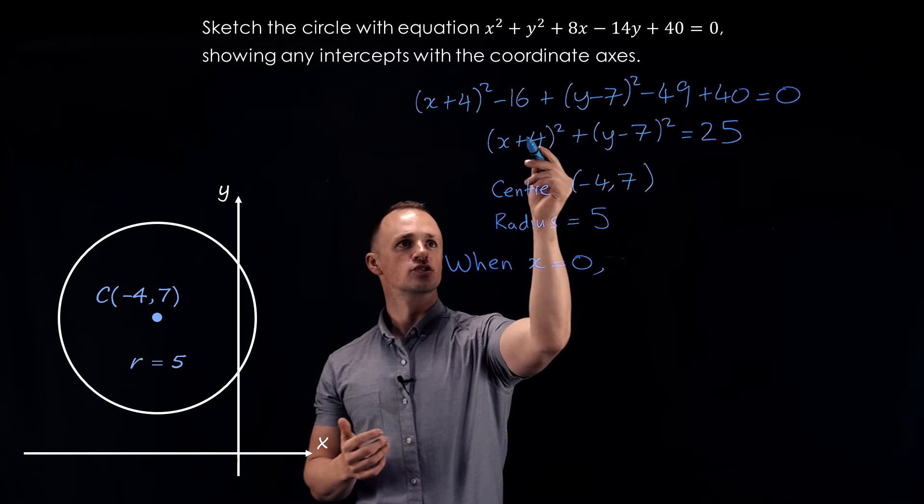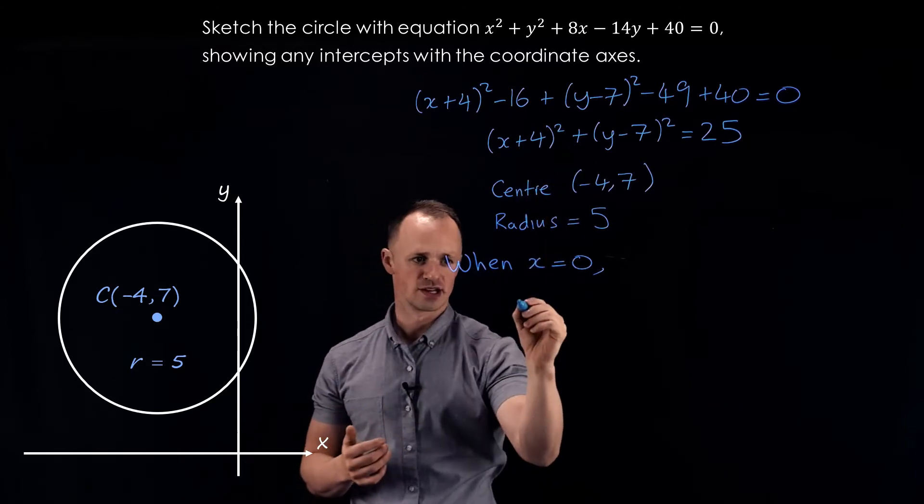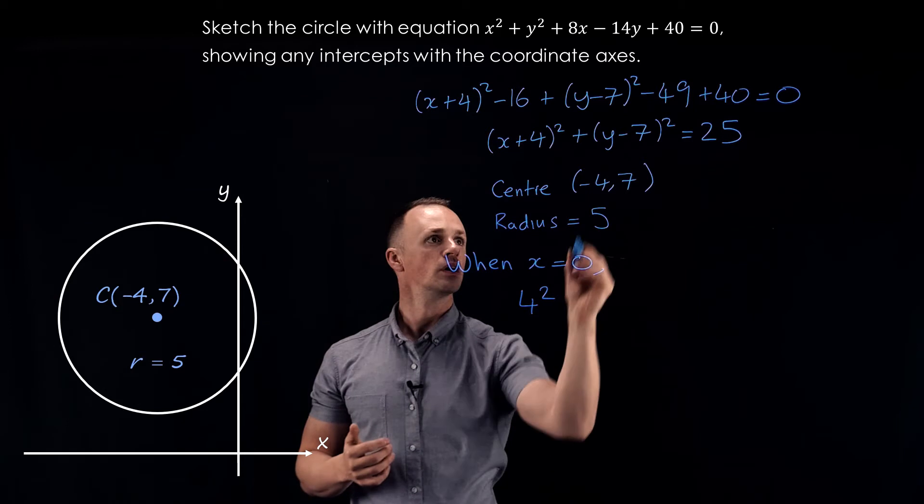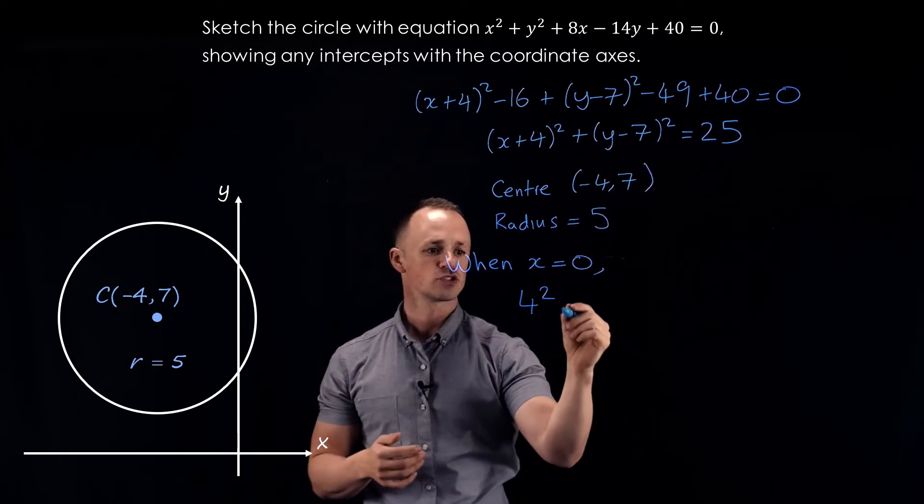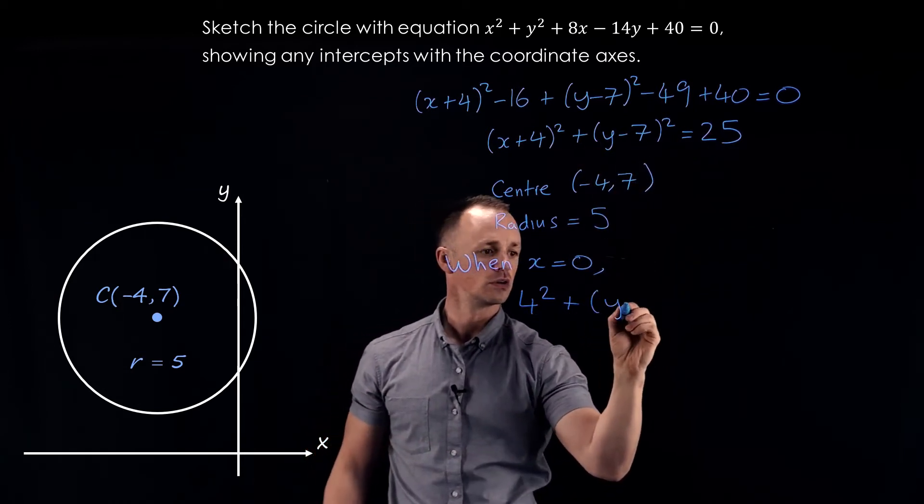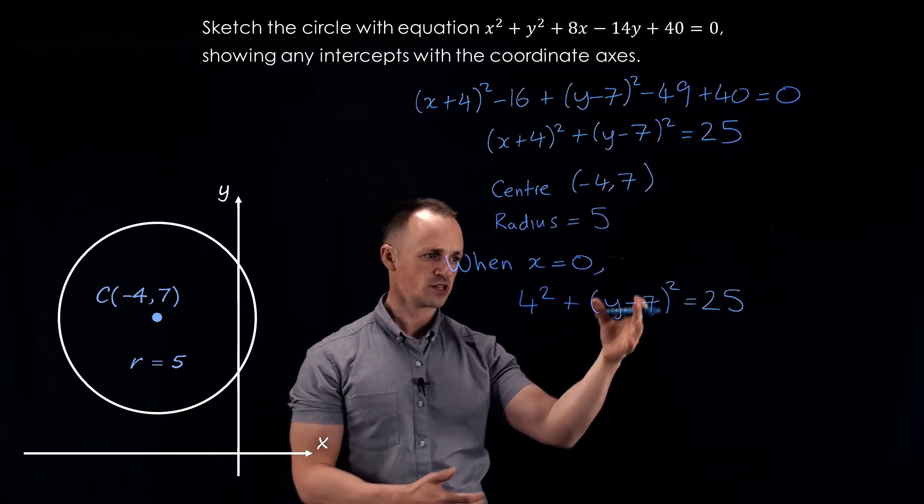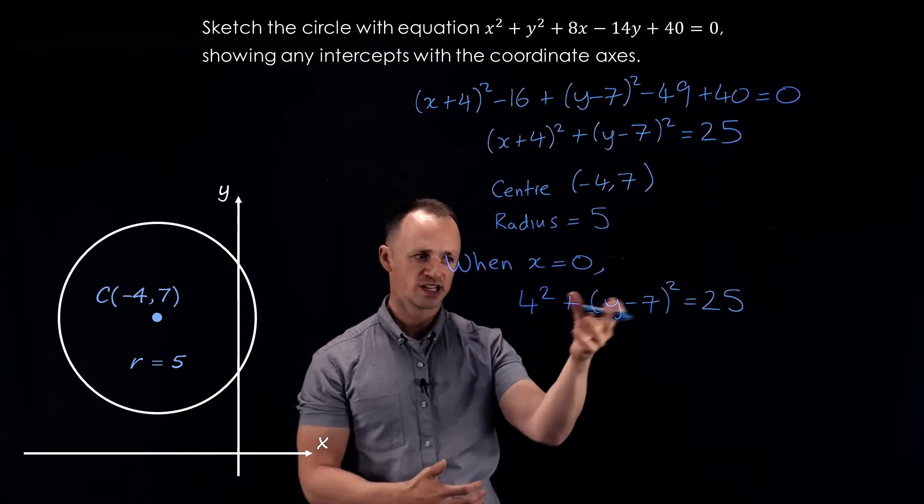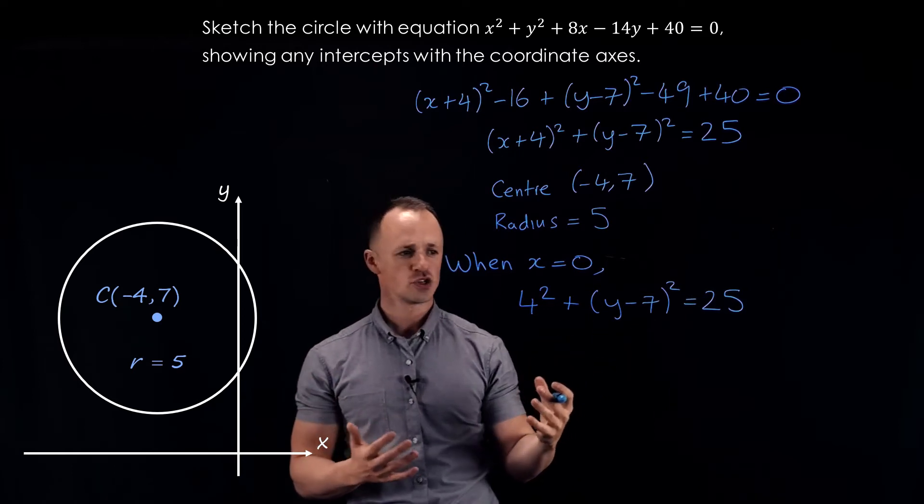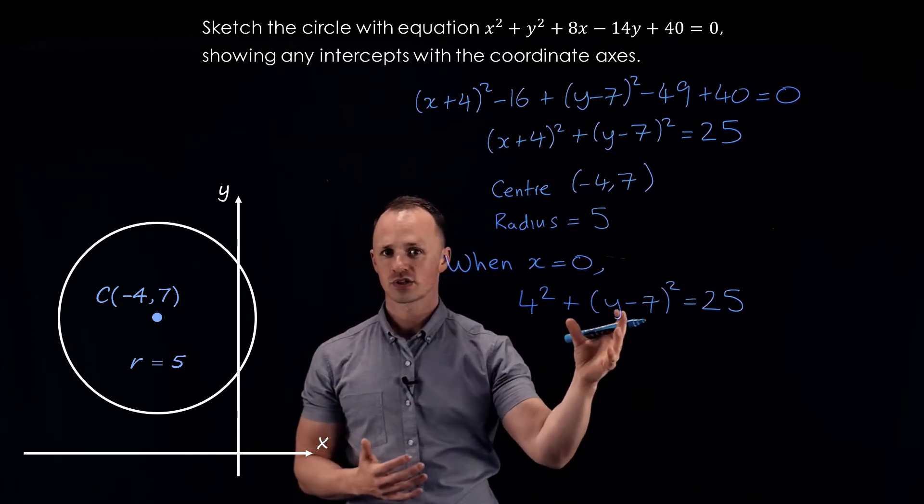So when I put x equals 0 into here, I'm just going to get 4 squared. The other parts contain y, so they'll stay as they are. Now you could solve this by making the quadratic equal to 0, expanding out the bracket, and solving it as usual. But because it's already in completed square format, there's a quicker way of doing it.